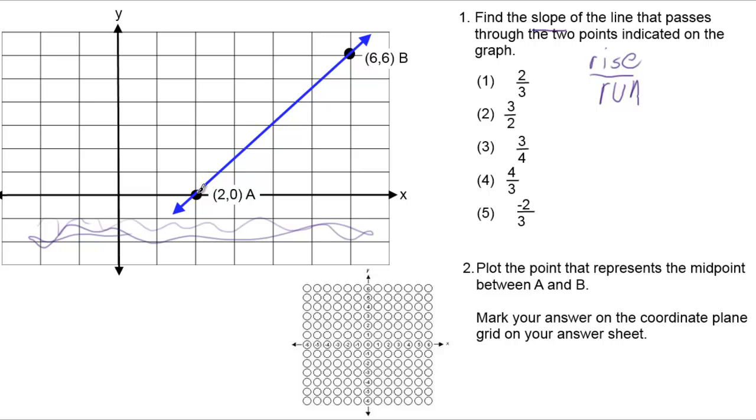So all you do is just count: 1, 2, 3, 4, 5, 6. And we stop here because now we're lined up with this point. So it goes 6 spaces up. So that's our rise.